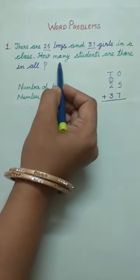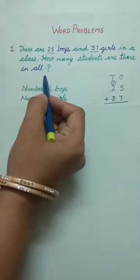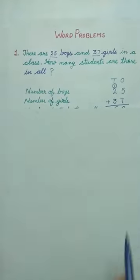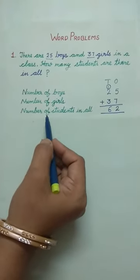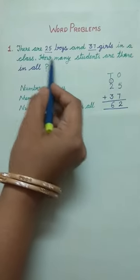Now, the third statement is 'how many students are there in all?' This is question line. Here we make our third statement, the answer statement, with the help of this question line. How many? In place of 'how many,' again we write the word 'number of.'